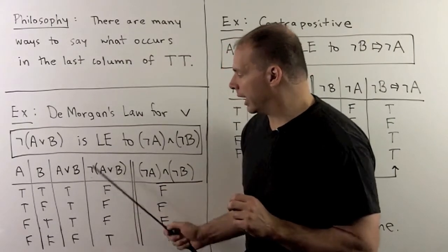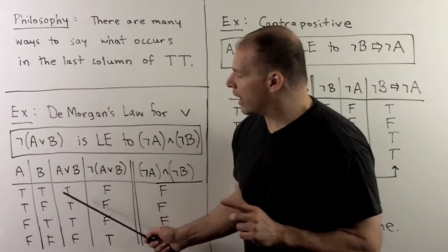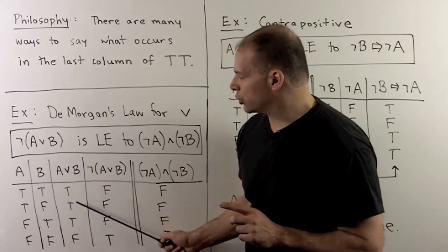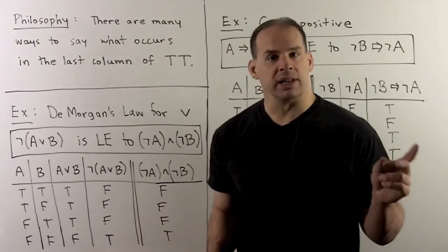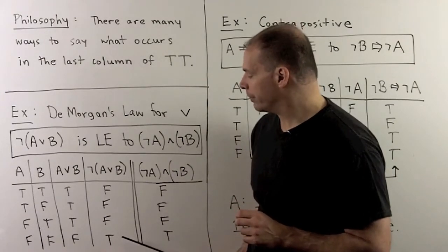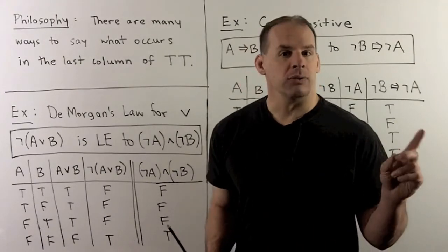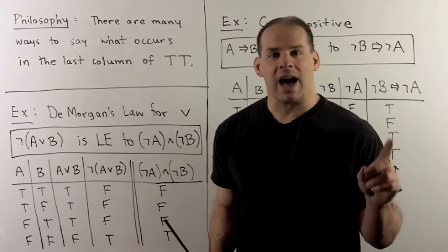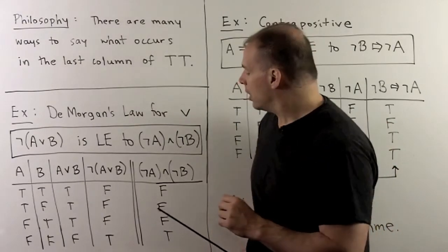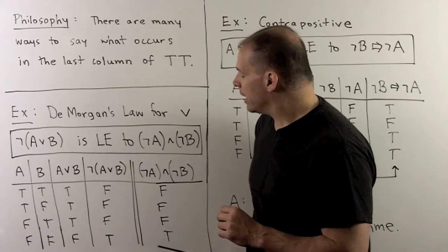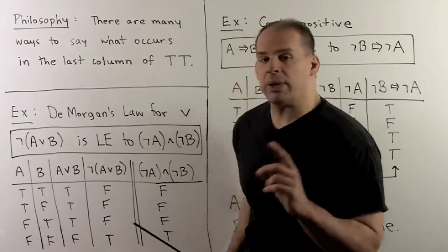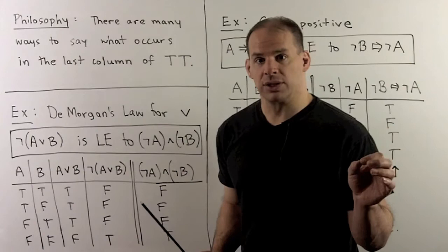We compute A or B, which is true whenever one of A or B is true: TRUE, TRUE, TRUE, FALSE. Taking the negation gives FALSE, FALSE, FALSE, TRUE. Working out not-A and not-B gives FALSE, FALSE, FALSE, TRUE. We see that these two columns are equal, confirming logical equivalence.